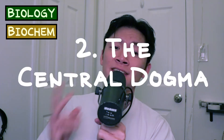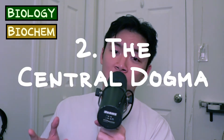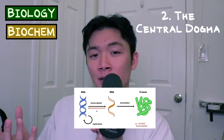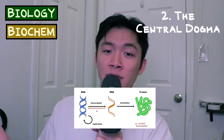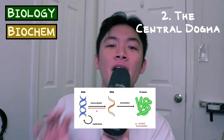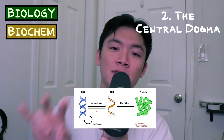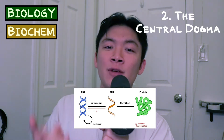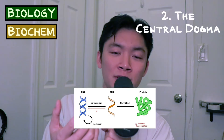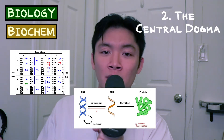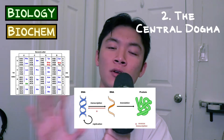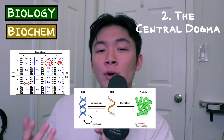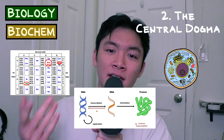Number two: the central dogma of biology. The central dogma is that DNA is transcribed to RNA, which is translated into proteins. You're going to want to know every single detail of both transcription and translation — from the enzymes involved in DNA replication and transcription to your start codons and stop codons. You don't have to memorize the whole codon list, but you do need to know your start and stop codons, and also where each of these processes happens in the cell.